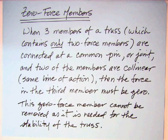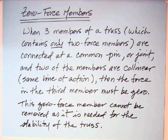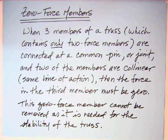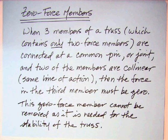Note that this zero force member cannot be removed, as it's needed for the stability of the truss, especially under other loadings. This particular pin or joint may not have any load for this loading situation, but for another it might very well be. A lot of times folks say that if you find a zero force member you can take it out — but it's there to start with, and just for this particular loading it happens to be zero.